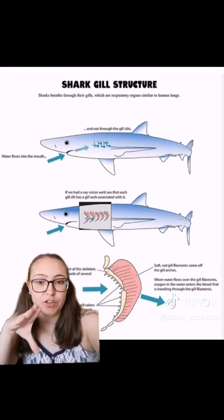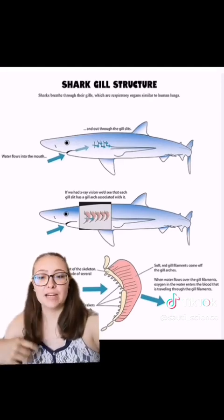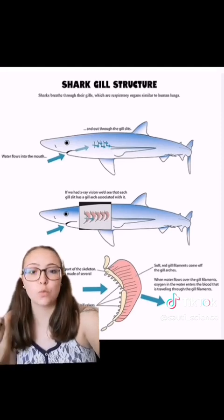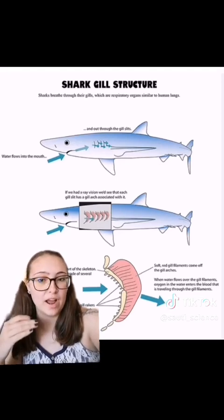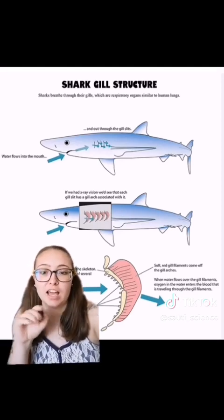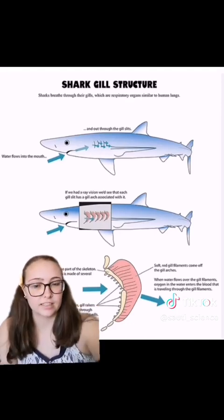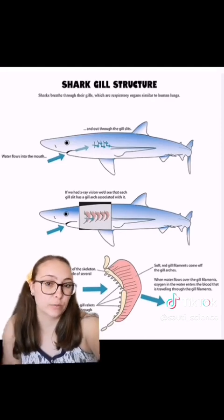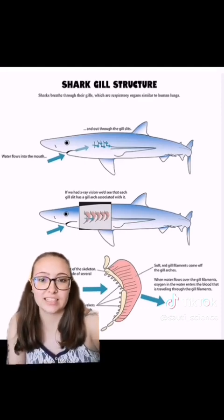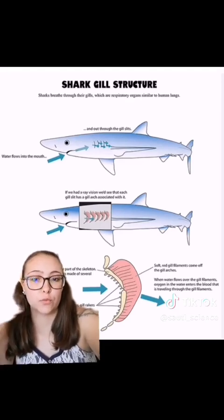Fish that use ram ventilation do not have the mechanisms to actively pull water in through their mouth and over their gills. What they have to do instead is swim with their mouth open constantly, so water is just shoved in — basically, open your mouth and move forwards. As the water goes in through the mouth and over the gills, it is absorbed into the bloodstream. So sharks have no way of inhaling water like some other fish species do, so they have to rely on the going-forwards motion to force water into their mouths and over the gill slits, and then out. That is why they have to keep swimming in order to keep breathing.